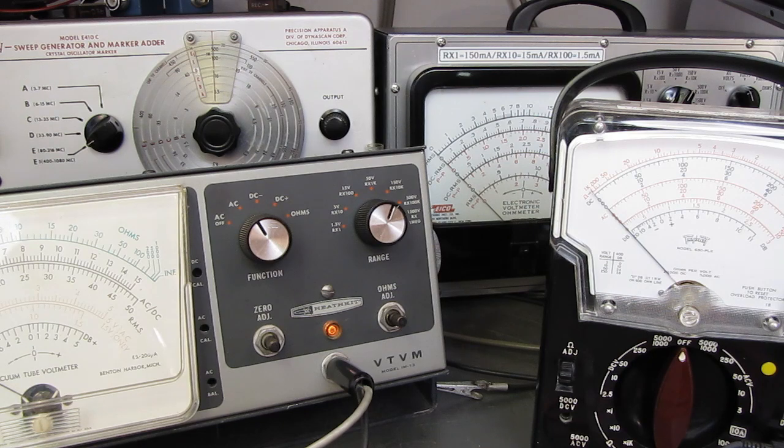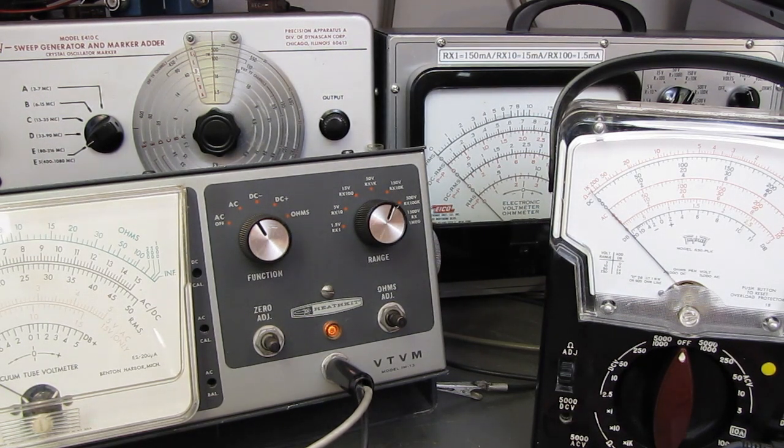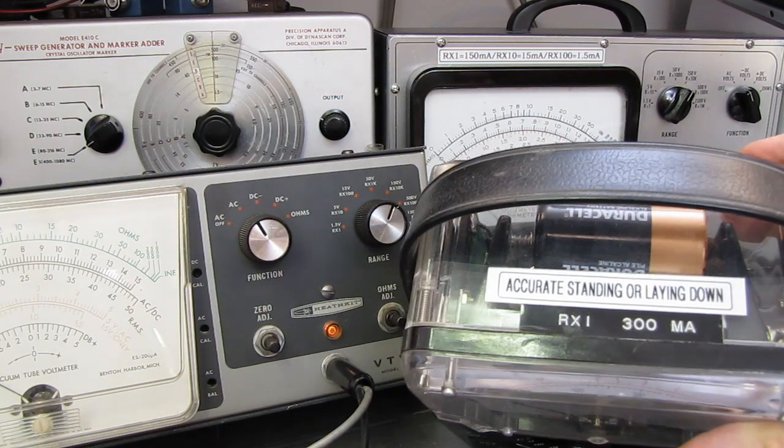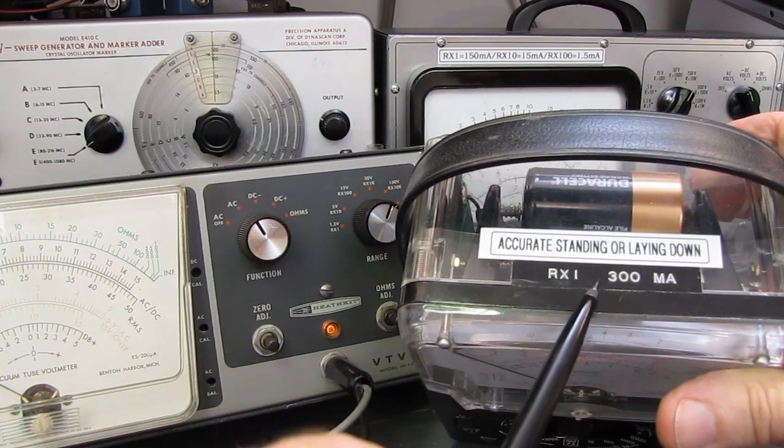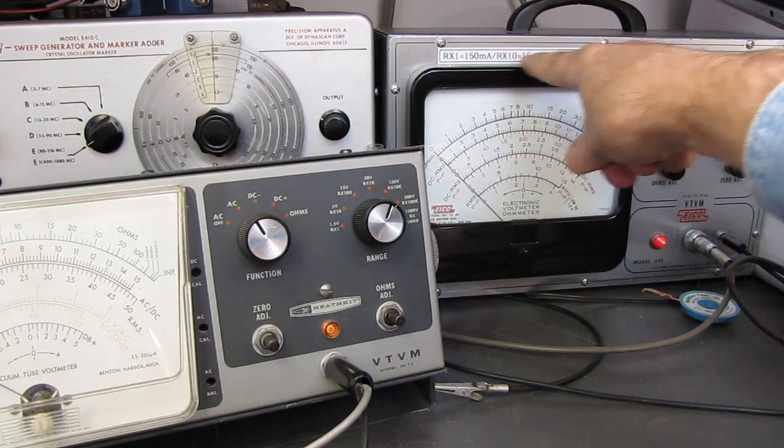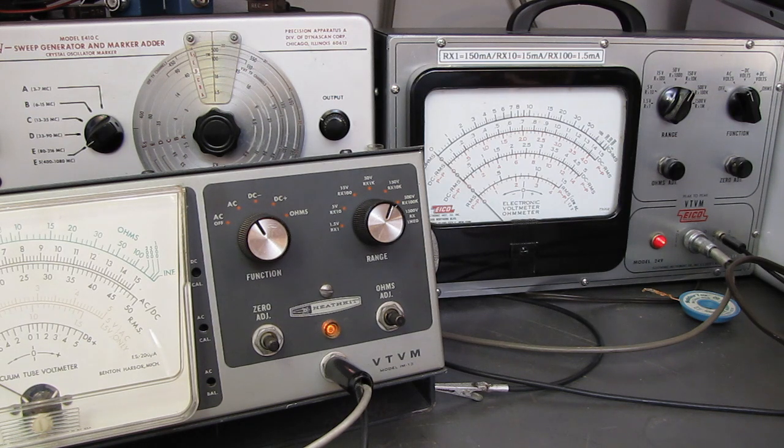But wait, there's more. I promise this is it. This is something I meant to do and I spaced it. I get asked all the time. Why on top of my meters I have this R times 1 300 milliamp years. R times 1 150 times 10 15 and so on. You should characterize your meters. The reason being, it's not uncommon today to see fuses that are a tenth of an amp. 150 milliamp years.